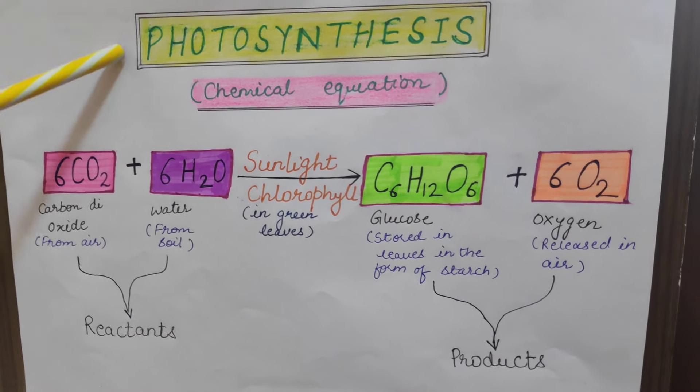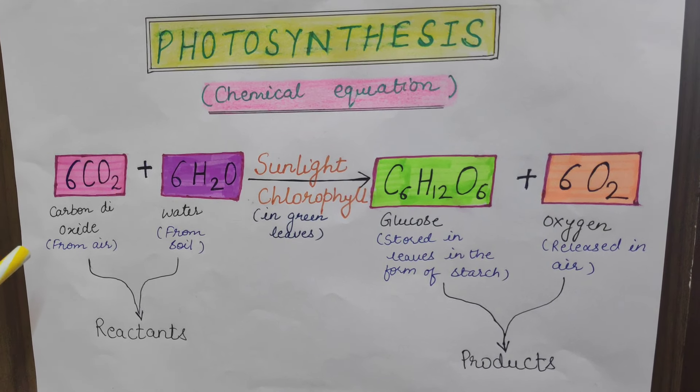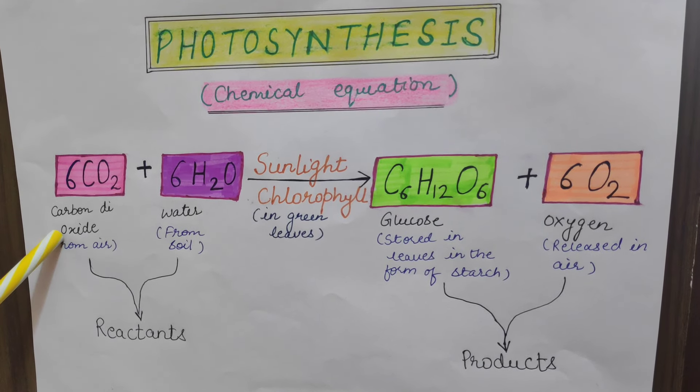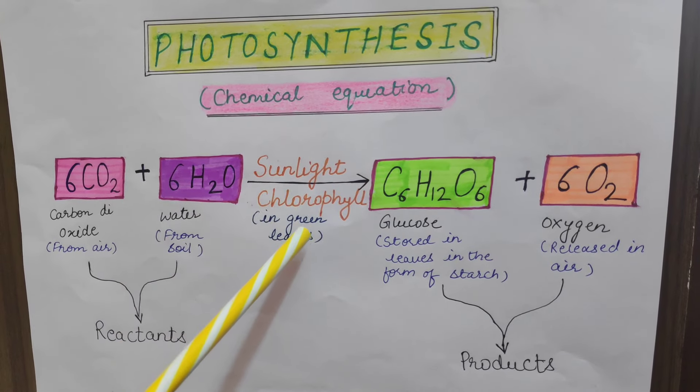Chemical equation involved in the process of photosynthesis. Now the raw materials required for photosynthesis are carbon dioxide, water, sunlight and chlorophyll.